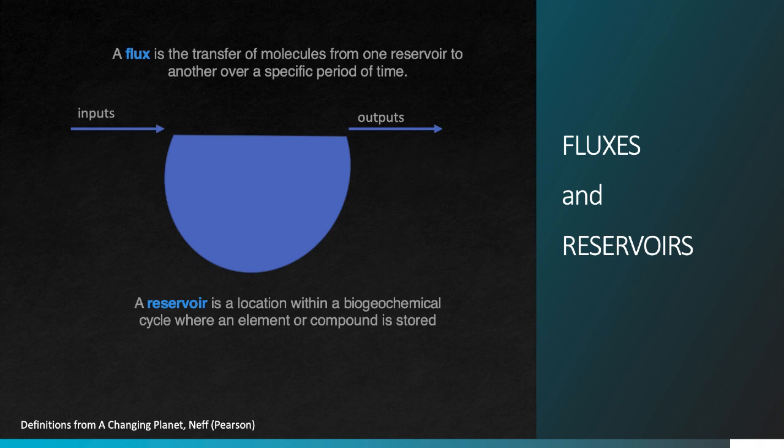This brings us to two key concepts for understanding biogeochemical cycles: fluxes and reservoirs. A flux, formally, is the transfer of molecules from one reservoir to another over a specific period of time. We can have fluxes of many different substances, including carbon, nitrogen, or in this case, water. A flux of water is what you see when you look at a river — a river is carrying surface water from one reservoir to another. A reservoir, in this context, is simply a location within a biogeochemical cycle where an element or compound is stored.